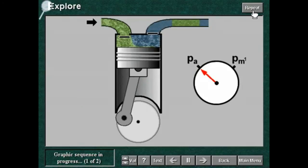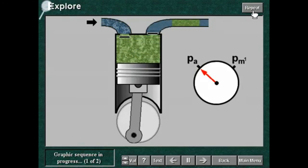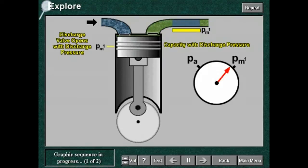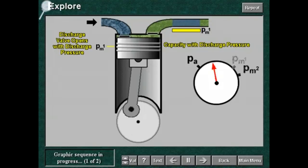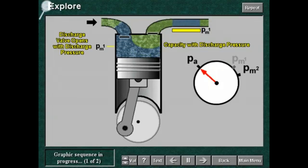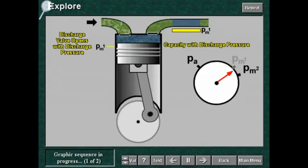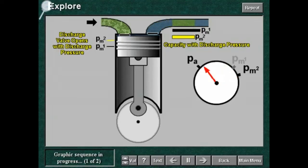Consider now a single stage compressor. If a higher delivery pressure happens, the compression ratio is increased and volumetric efficiency decreases. Less gas is delivered to the user and the compressor capacity is decreased.